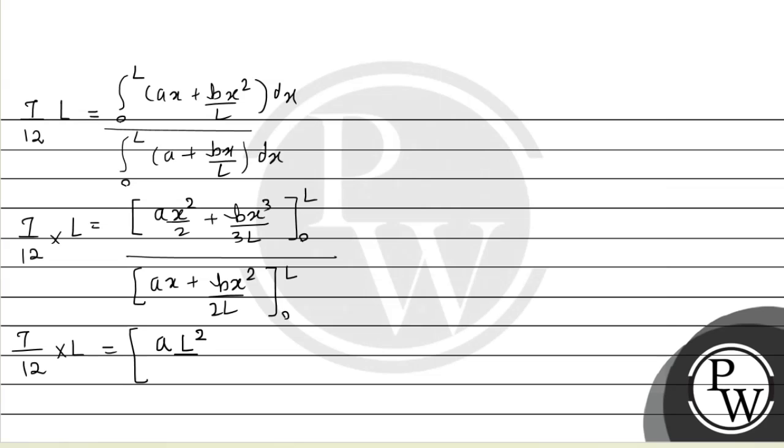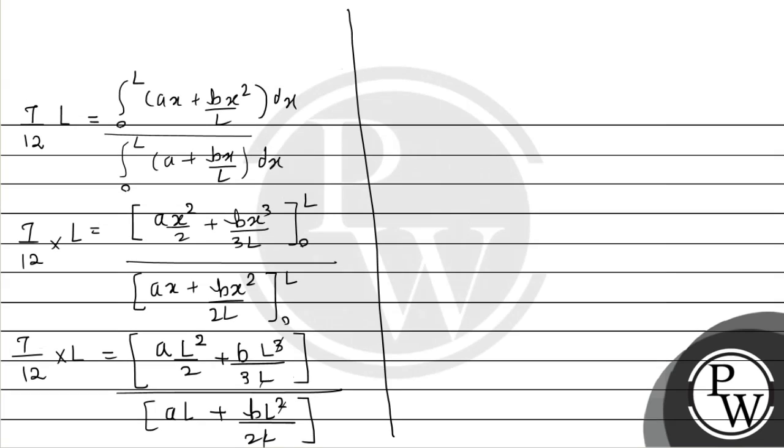That is a L square by 2 plus b L cube divided by 3L, divided by a L plus b L square divided by 2L. L cancels from numerator and denominator. Further simplifying, 7 by 12 equals L square common from numerator: a by 2 plus b by 3, divided by L common from denominator: a plus b by 2.